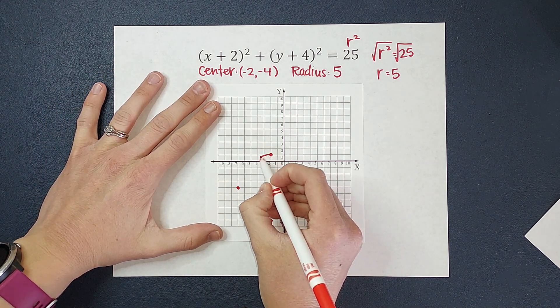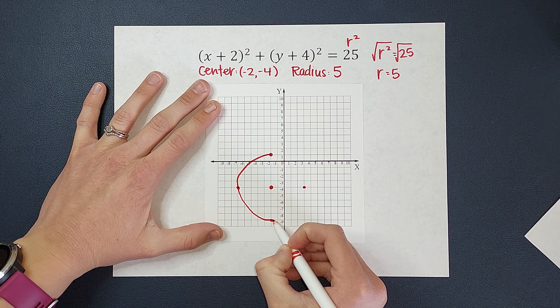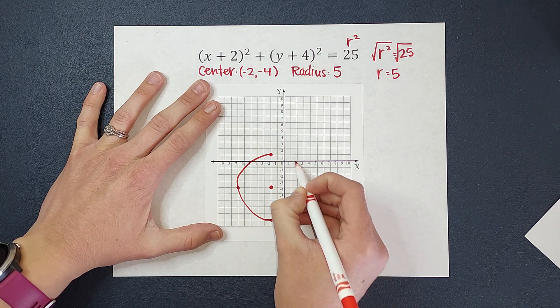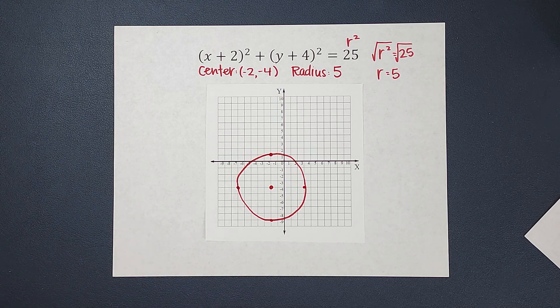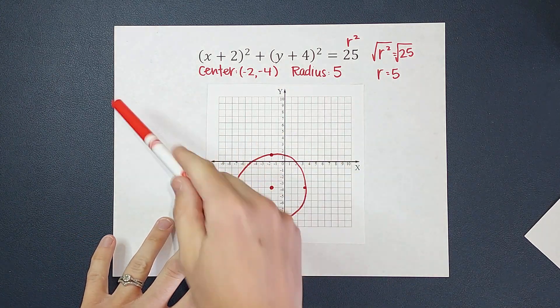So I'm going to do a circle. It may not be perfect. In fact, I know it's not going to be perfect, but gives us the general idea, right? So that is what my circle looks like for this equation.